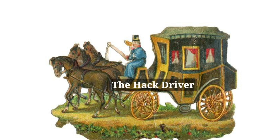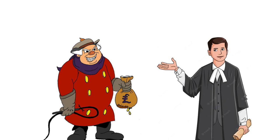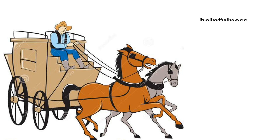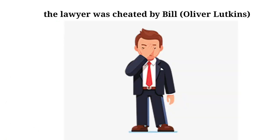The story The Hack Driver is about a man named Oliver Lutkins. He was a cunning man who duped a young lawyer — also the narrator of the story — when he came to serve summons on Lutkins. Oliver pretended to be a hack driver and called himself Bill Magnuson. Throughout the story, Lutkins impressed the narrator with his helpfulness, liveliness, philosophical attitude, and generosity. But it is only at the end that the suspense is revealed: the hack driver Bill was Lutkins himself.